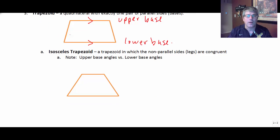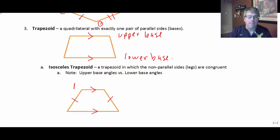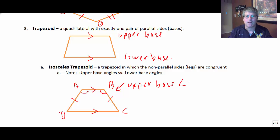And finally, the isosceles trapezoid. It's also in the trapezoid family — it's in the quadrilateral family, but notice it's not in the parallelogram family. An isosceles trapezoid is a trapezoid, so my bases are parallel, and the non-parallel sides, or the legs, are congruent. And then we'll talk about upper and lower base angles — A and B might be the upper base angles, and C and D are the lower base angles.